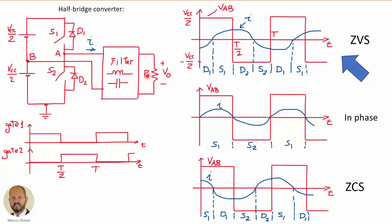In this case we are generating an AC signal, so it's operating as an inverter, but it's also possible to add a rectifier at the output with a filter and implement a DC-DC converter. In any case, we have a half bridge and a current I coming out of it. This current, depending on the switching frequency and the filter, is going to have three possibilities regarding its phase with respect to the output voltage.